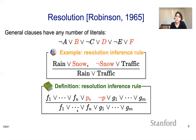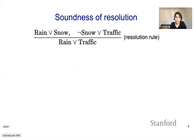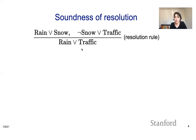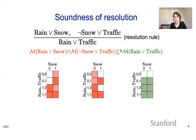This is called resolution. Is resolution sound? In general, we want it to be sound because we want to derive things that are actually true. To check soundness, I need to get to the models and meanings of each formula and check entailments. Let's check that on the rain/snow example.